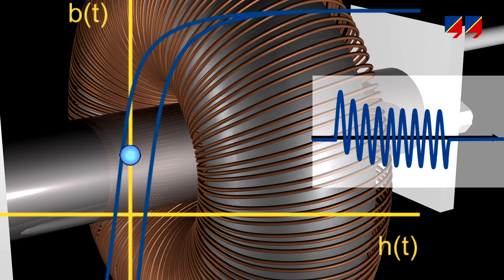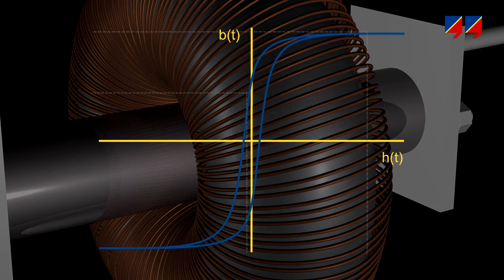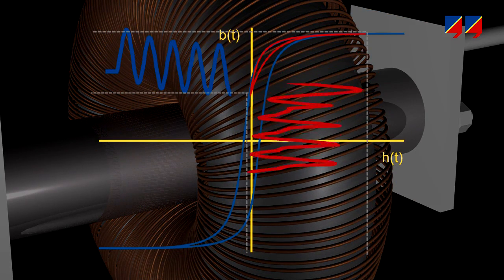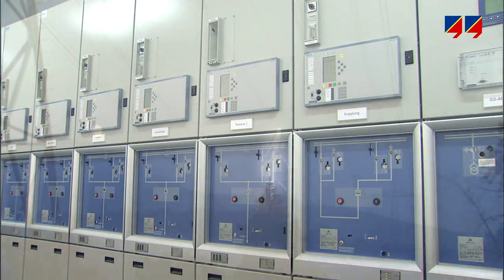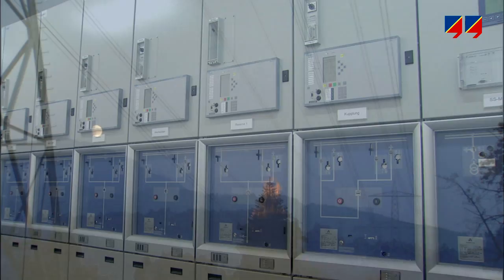With each cycle, magnetic flux from the fault condition is added to a growing remnants flux from previous cycles. At some stage, the CT will not transform the fault current correctly, preventing the protection system from clearing the fault quickly, or in the worst case, not at all.